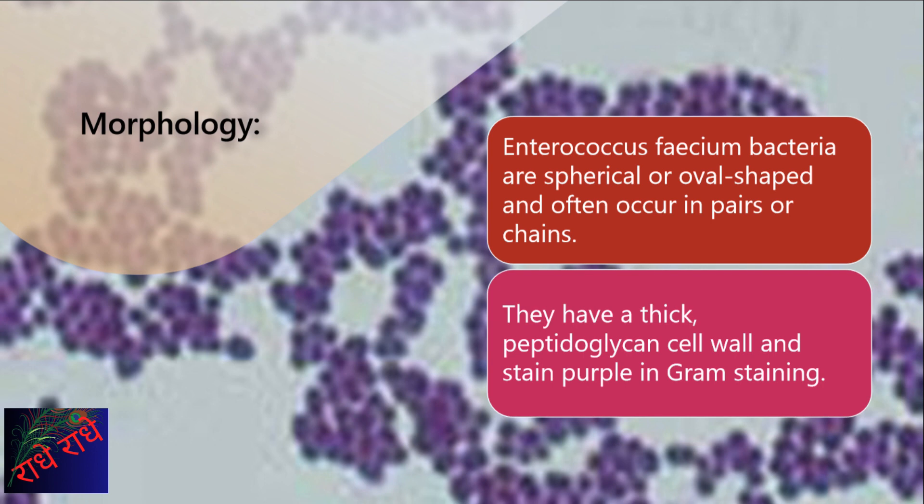E. faecium is a type of bacteria typically spherical or oval-shaped, seen in pairs or chains. Cell walls are thicker compared to other bacteria, and stain purple when subjected to gram staining.